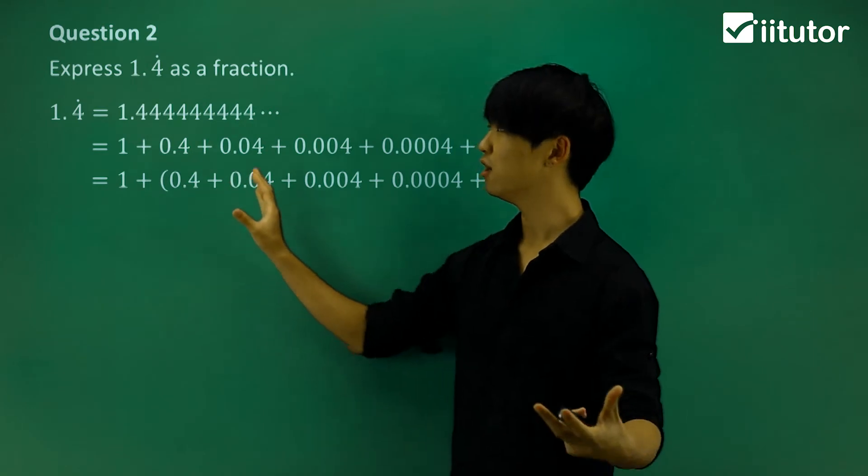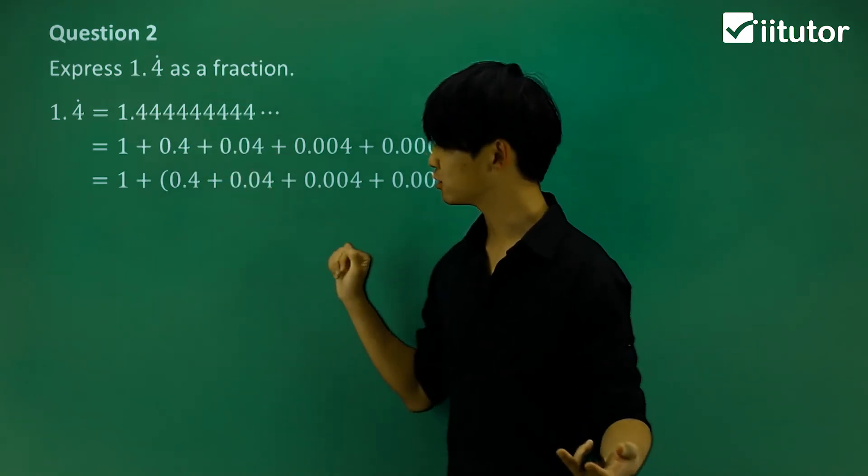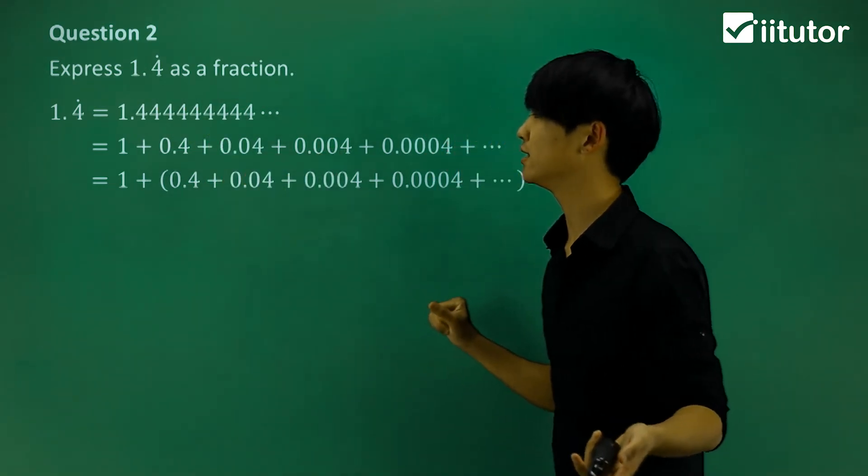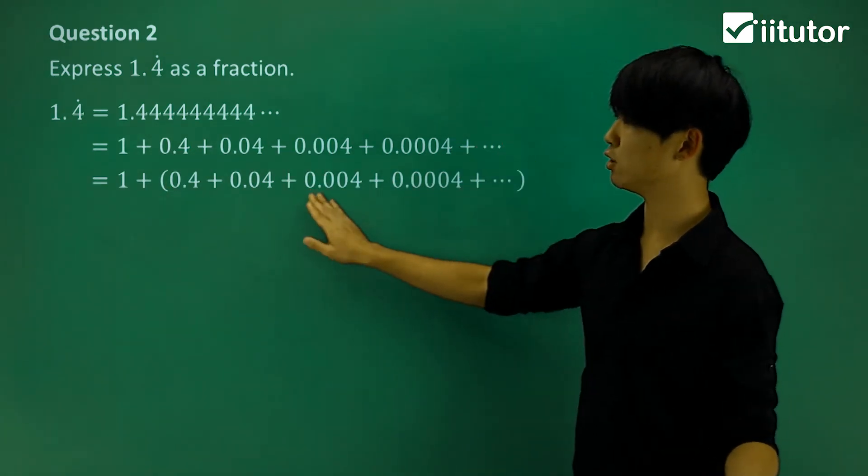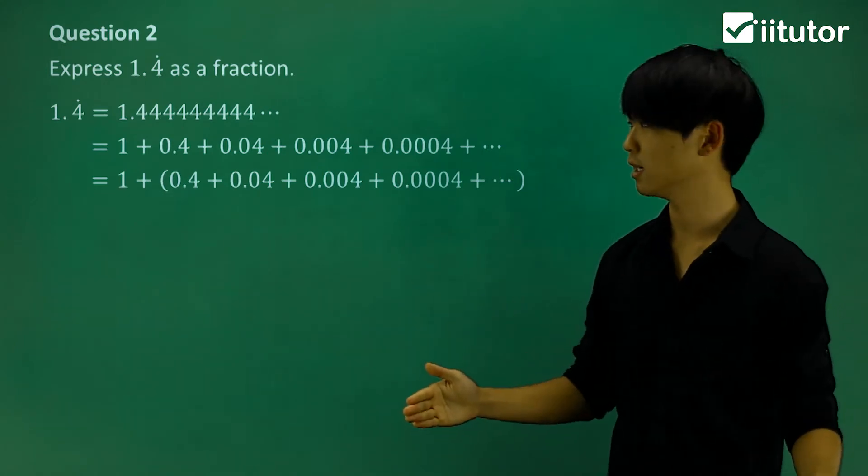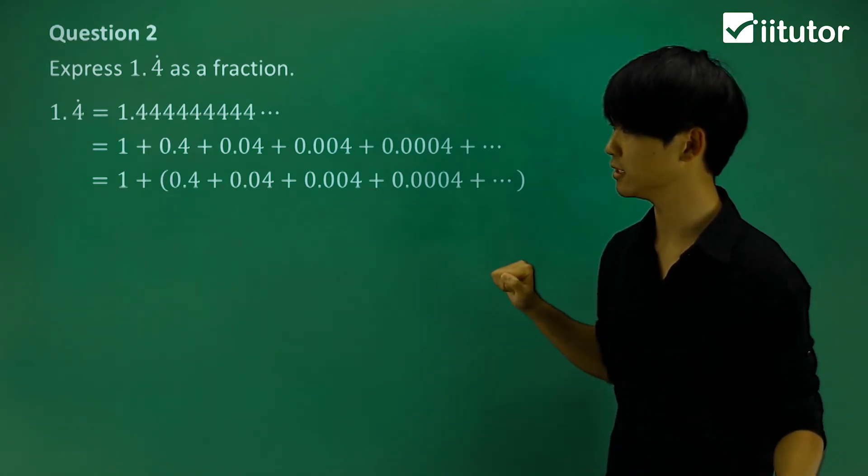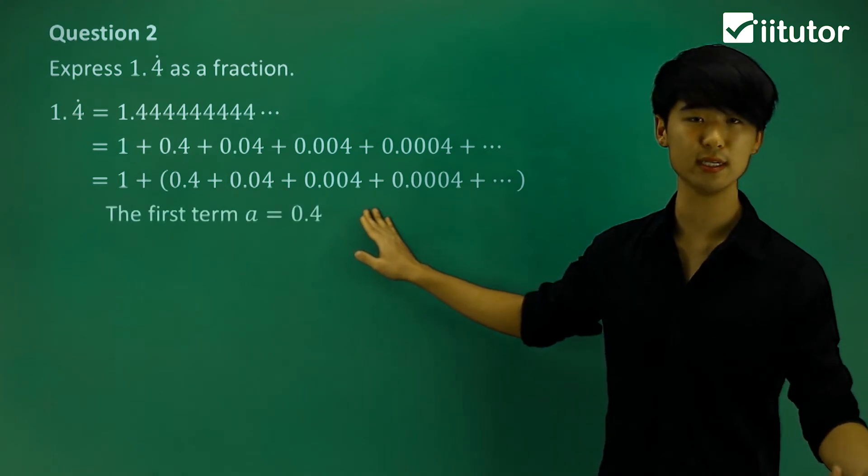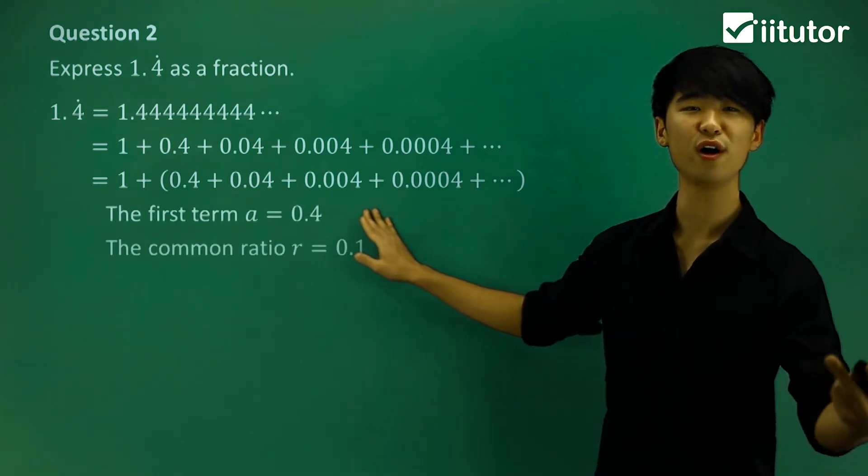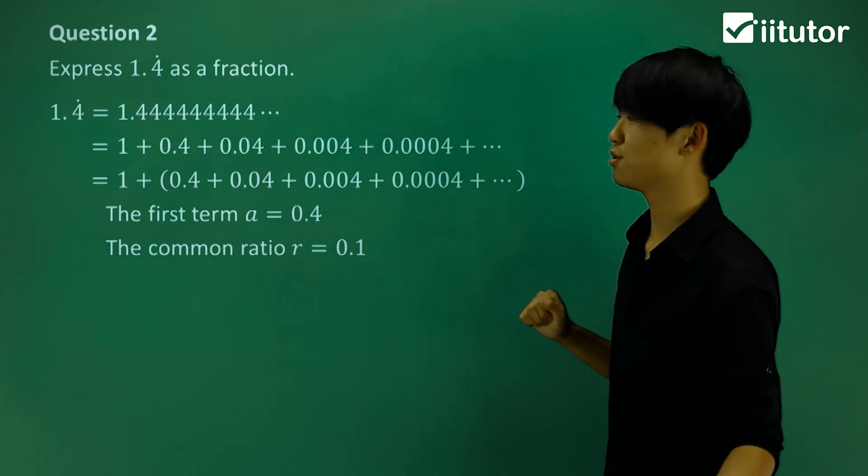So we're going to be working on finding the limiting sum of my recurring decimal with some extra value there. I want you to be careful. You're going to look at it and make sure that we are finding the correct limiting sum for the geometric series. We're just going to be looking at the portion inside the brackets. And we can see, first term is 0.4 and my common ratio is 0.1.